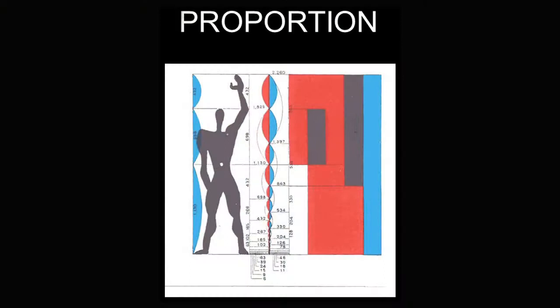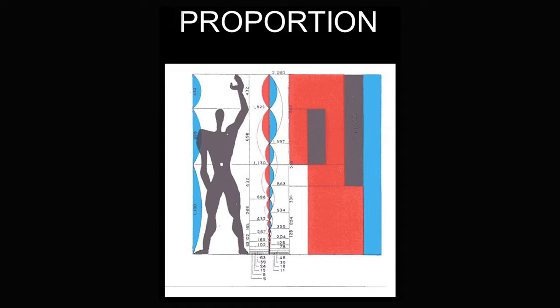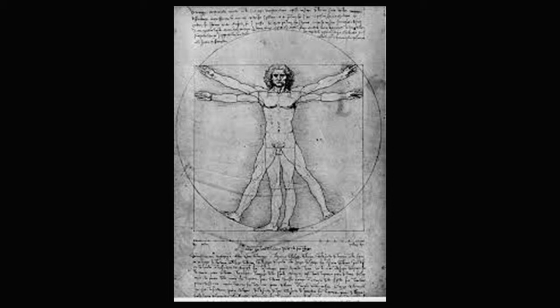Proportions, to us as architects, is a system of knowing how large an element should be. How large should a window be? How large should the base of that building be? We apply it all to the human form using a lot of different proportioning systems to determine those sizes. Scale talks about the differences of a space — from an intimate space where the ceiling is very low, to a space like the IX Center in Cleveland where it's such a large space that it's kind of shocking and a little uncomfortable. That's scale and how we use it to manipulate and invoke an emotion.